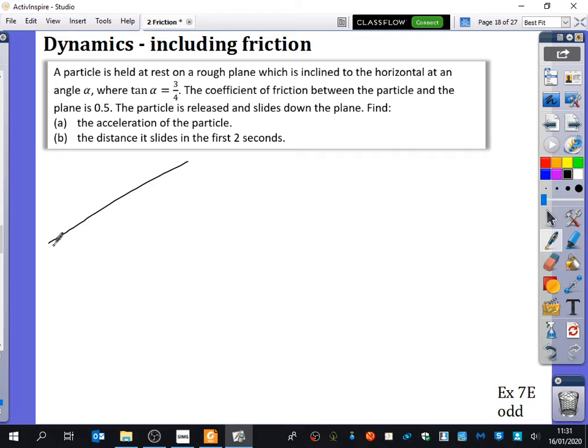So I'll draw my diagram. Same old, same old. Getting a bit boring now. And it's being held at rest on a rough plane. So that means there's probably some kind of force holding it. But we're not interested in that bit where someone is holding it. We're interested where the particle is released. So there will be no force from anyone holding it. We're just going to leave the particle as it is.